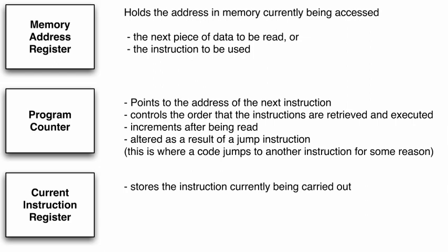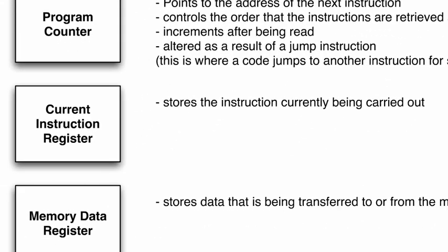You just need to know the definition. There are four points, but generally you'll only get questions worth two marks, so two of those points will give you the marks. The next one is the current instruction register — quite simply, it stores the instruction currently being carried out. That should be very simple to remember. So for a two-mark question: name a register — current instruction register — stores the instruction currently being carried out.